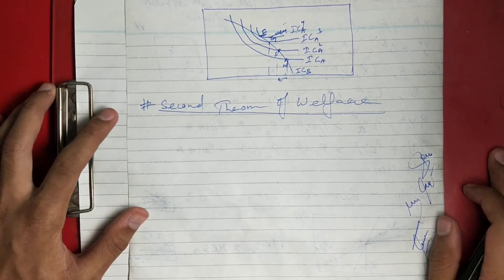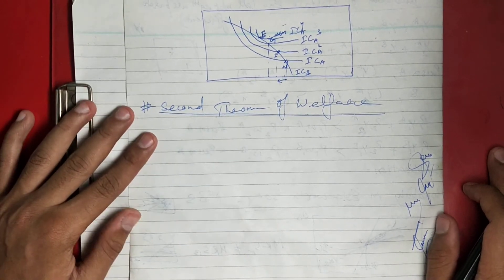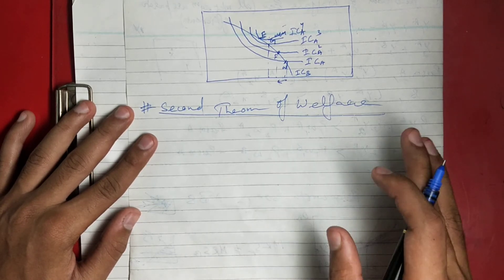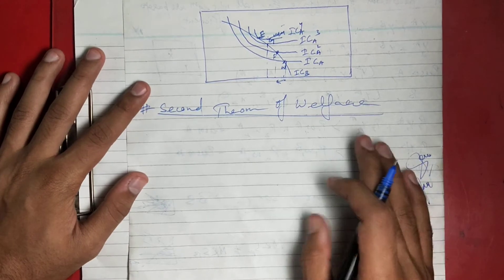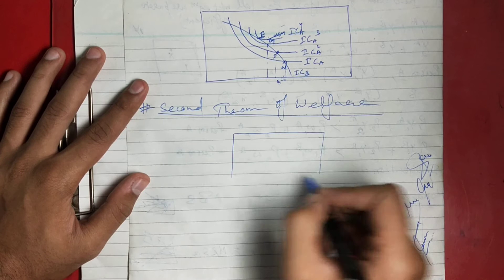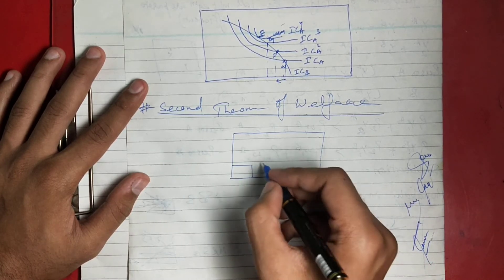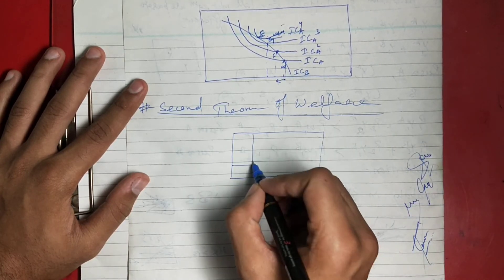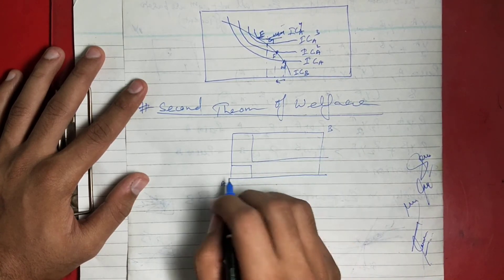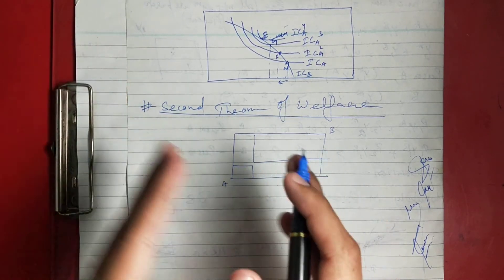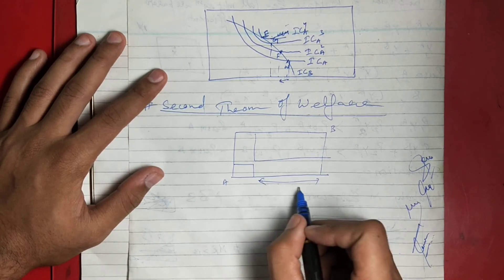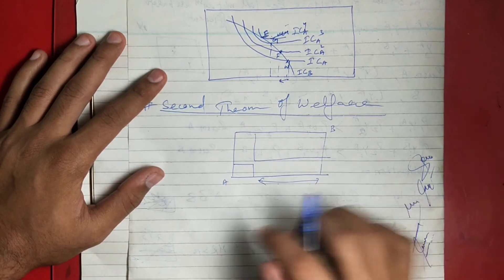In the Second Theorem we focus on fairness. The government reallocates endowment so that there is fairness in the economy and social welfare is also achieved. Suppose agent A has very few units while agent B has many more units. Agent A is controlling very little of the market.